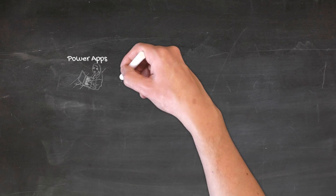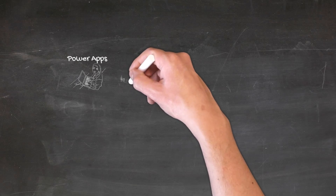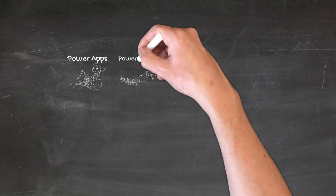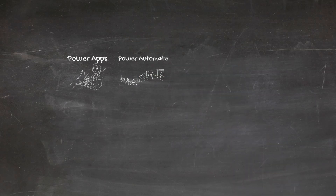The next component is Power Automate. Power Automate allows you to automate a series of steps. Think of it as rather than doing the work manually, where you might forget one of the steps, Power Automate can automate that work in a repeatable sequence with the consistency of a robot. You're able to connect to multiple systems through the connectors that we'll be talking about a little bit later.